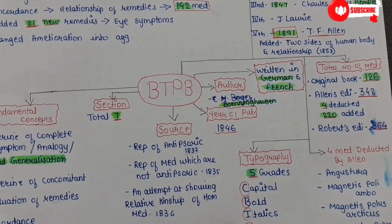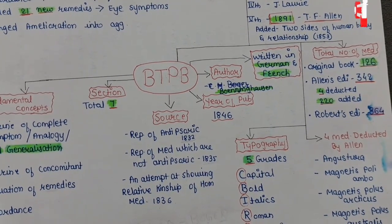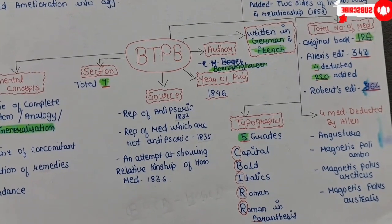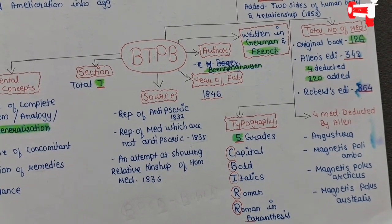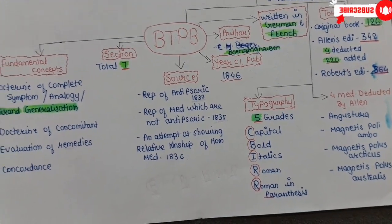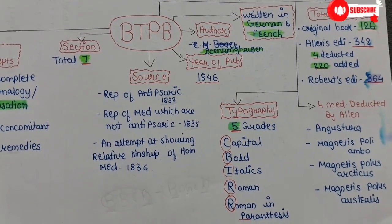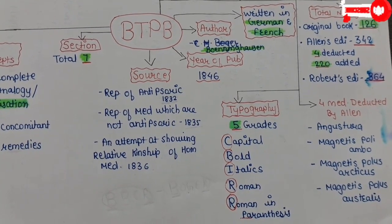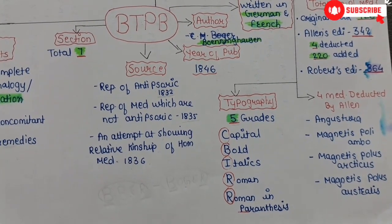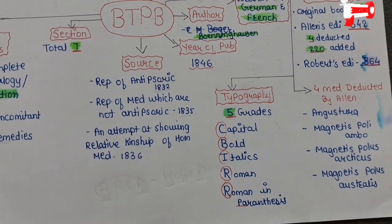This translation by Dr. T.F.L.N. is very important because he added two sides of the human body and relationships in 1853. Regarding total number of medicines: in the original book there are 126 medicines. In Allen's edition it became 342 — because from the original 126, he deducted four medicines and added 220 remedies, making the total 342.